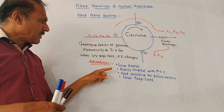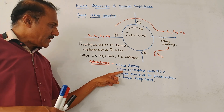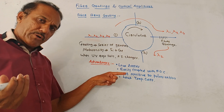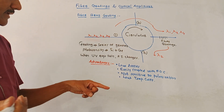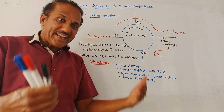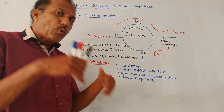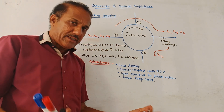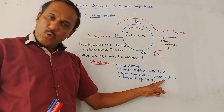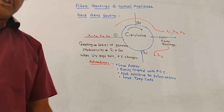The advantages of fiber Bragg grating are: losses are minimum; it can be very easily coupled to the fiber optic cable; it is not sensitive to polarization; and it has a low temperature coefficient.